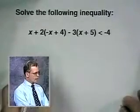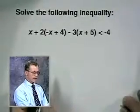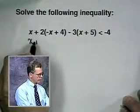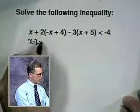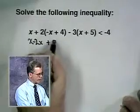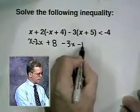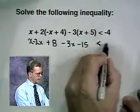As if it were an equation, we'd remove these parentheses using the distributive property. x minus 2x plus 8 minus 3x minus 15 is less than negative 4.